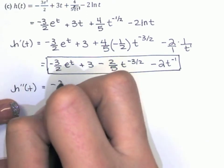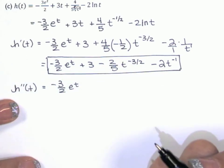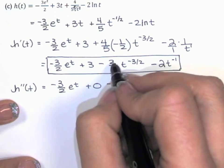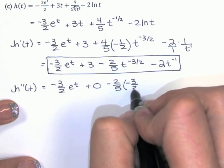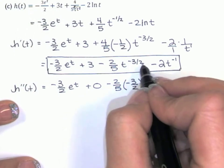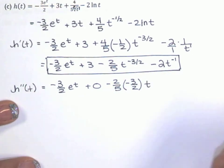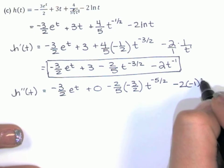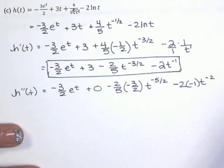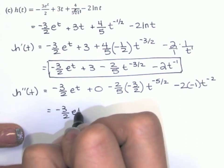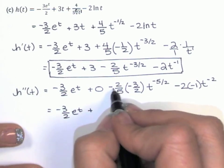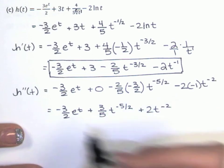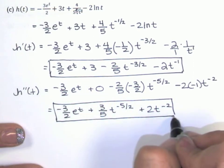Derivative of a constant times e to the t is that constant times e to the t. Derivative of a standalone constant is 0. Here I've got a constant times t to some power — I bring my constant down, then my power down, then multiply by t to the one less power. Negative 3 halves minus 1 is negative 3 halves minus 2 halves, that's negative 5 halves. Then I bring the negative 2 down, then negative 1 down, and multiply by t to the one less power — negative 1 minus 1 is negative 2. The 2s reduce; negative times negative is positive, so we end up with 3 fifths.